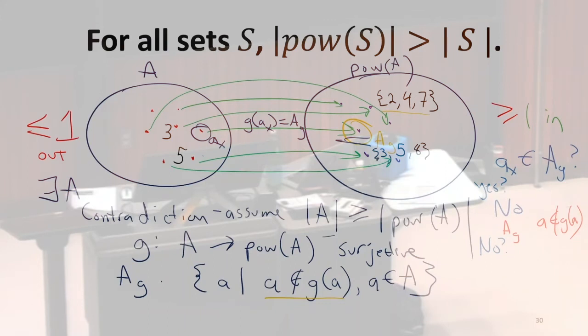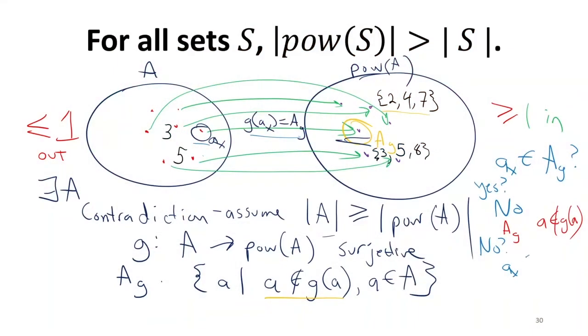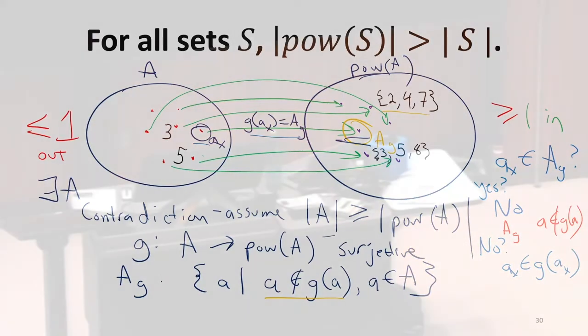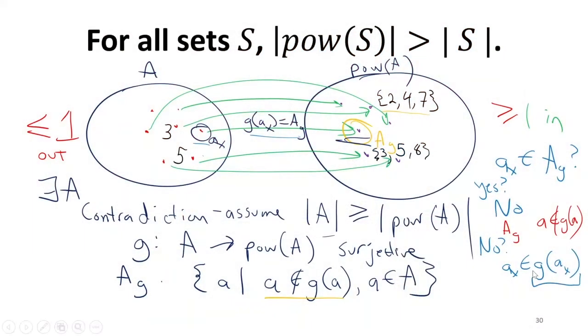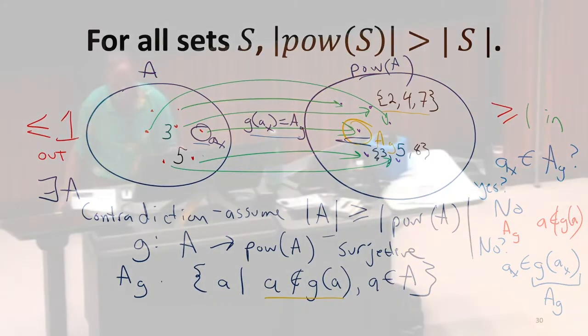Can it be no? Well, how do we pick A of X? A of X is the one that maps to AG. So if it's no, it's got to be in that set that it maps to, because that's how we define the AG set. But it also can't be in that set. We've got a contradiction either way. If that was the case, what is the set that A of X maps to from G? Yeah. That's the A of G set. That's how we define it. So both of these are contradictions. Neither one is possible.